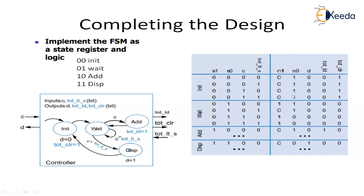In the initial state, the coin C equals 1 and the total_clear signal must equal 1, ensuring the total register is cleared. D must equal 0. The next state is 01 (wait state) for all input combinations when in the initial state. In the wait state (01), you can transition to state 10 (add), remain in 01, or move to 11 (dispense). If total_less_than_S equals 0, you move to the next state.